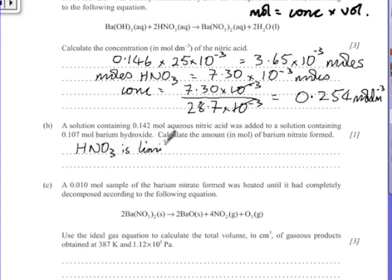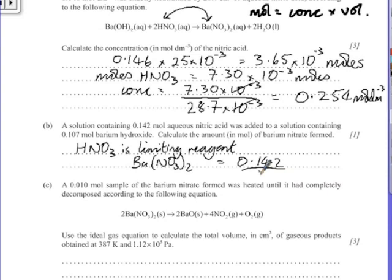We don't have enough of it. The amount of product depends on the limiting reagent. So the product we're looking at is our barium nitrate, and we can see that we get however much nitric acid, we get half that amount of barium nitrate. So barium nitrate formed is going to be half of 0.142. So it's going to be 0.071 moles.